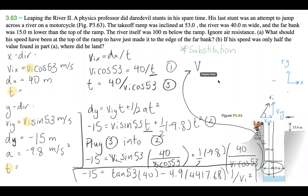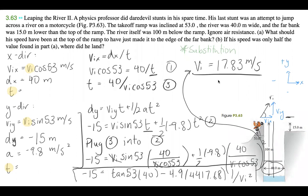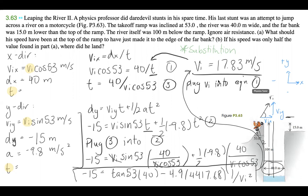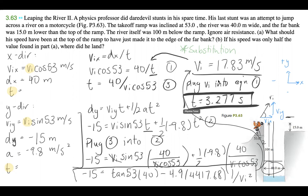Solving for v_i, I get v_i equals 17.83 meters per second. Then plugging that back into equation 1 to find t, I get t equals 3.277 seconds. That's the answer for Part A.